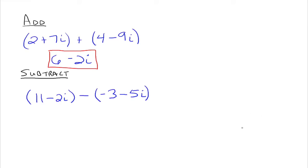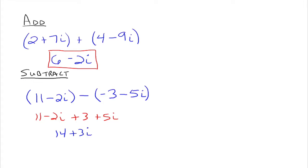To subtract two complex numbers, it's very similar to subtracting polynomials — distribute that negative through first. So you have 11 minus 2i, and then distribute the negative 1 through to get plus 3 plus 5i. Then you just combine like terms: 11 plus 3 is 14, and negative 2i plus 5i is plus 3i, giving you the new complex number 14 plus 3i. Adding and subtracting complex numbers is very similar to adding and subtracting polynomials — you're just combining like terms.